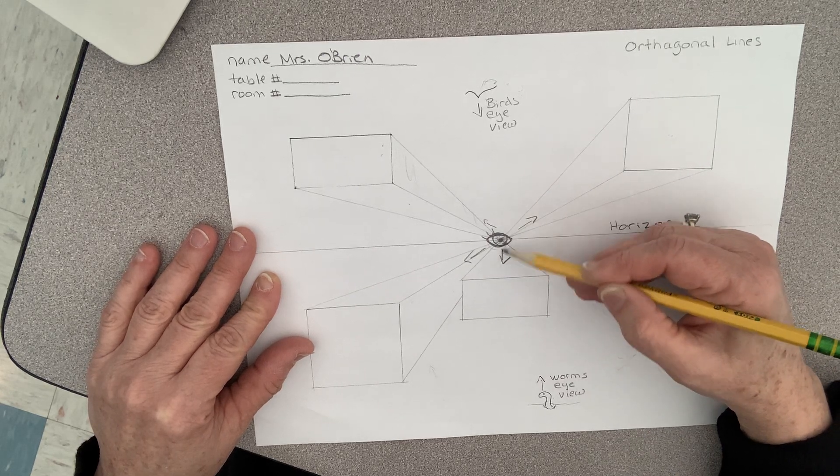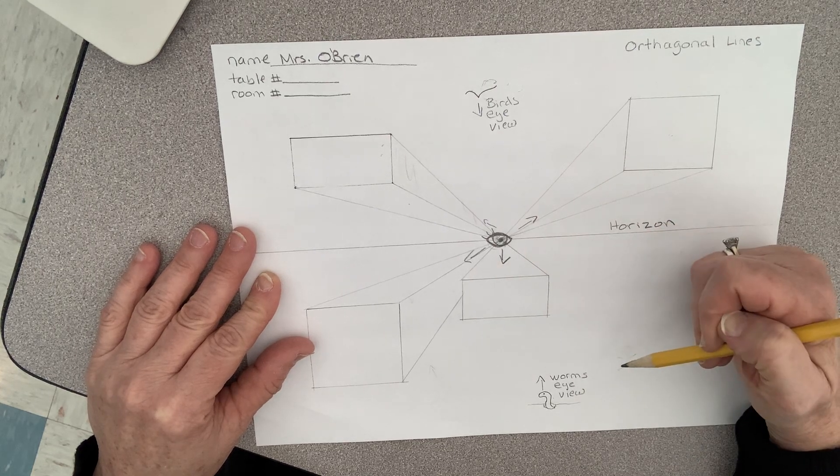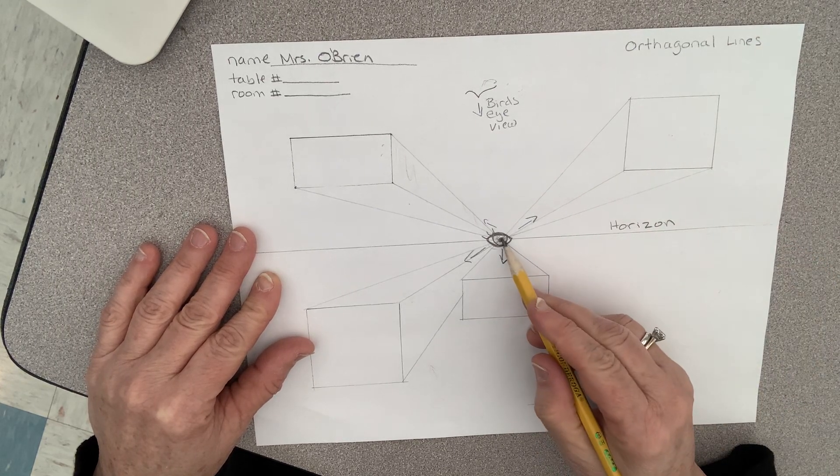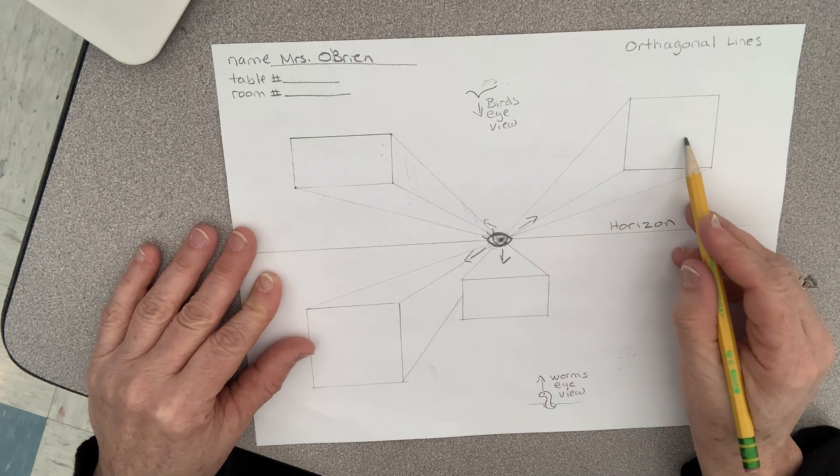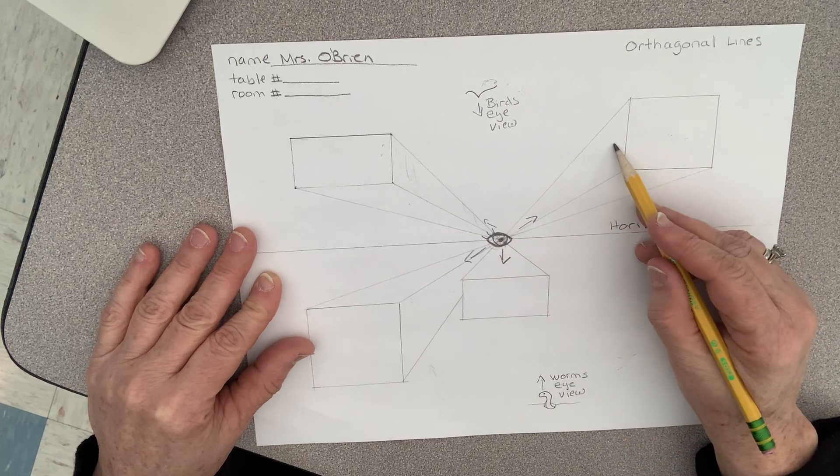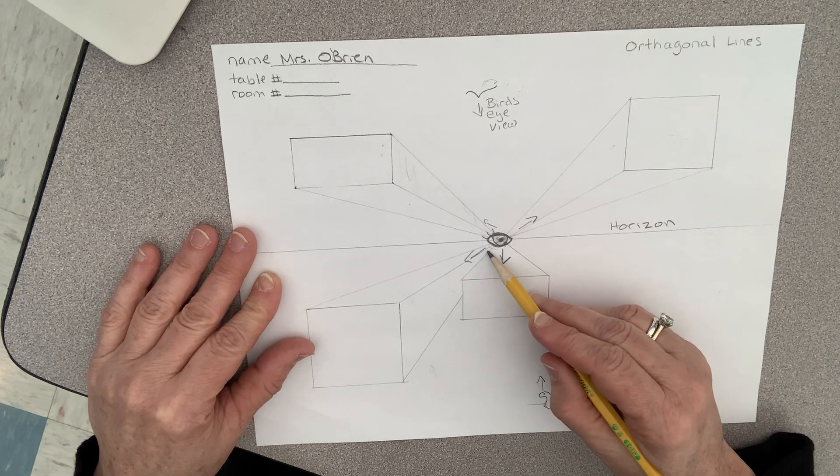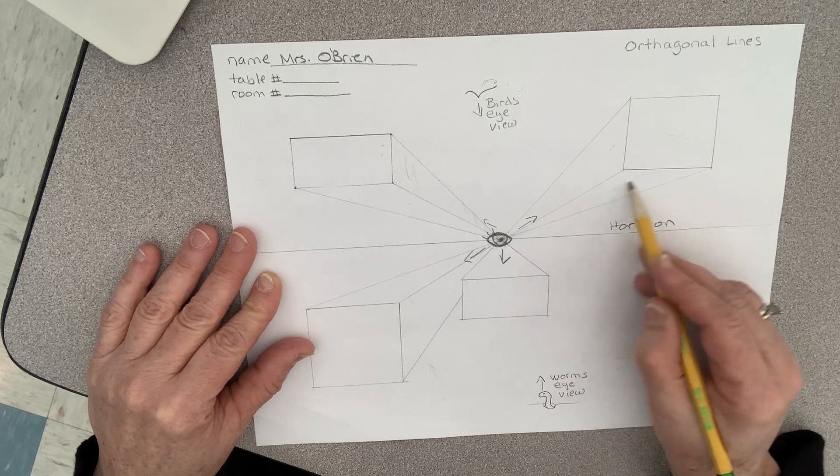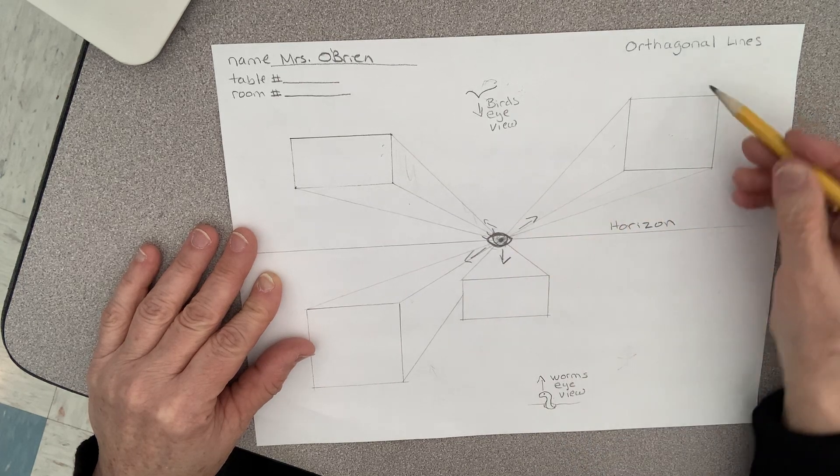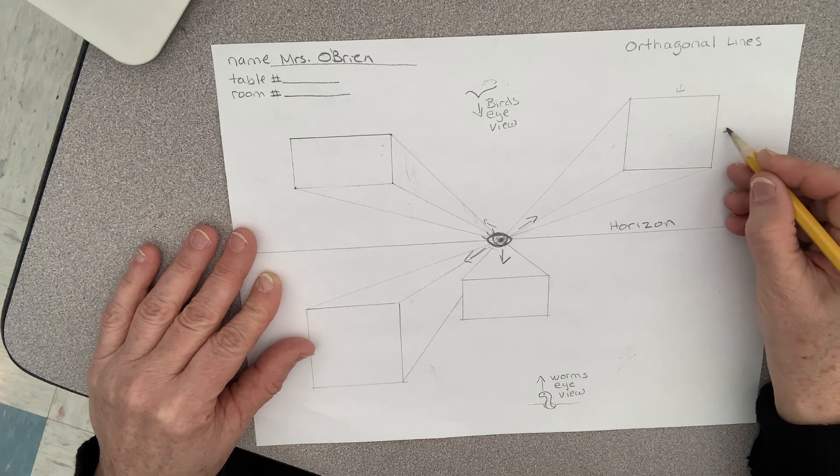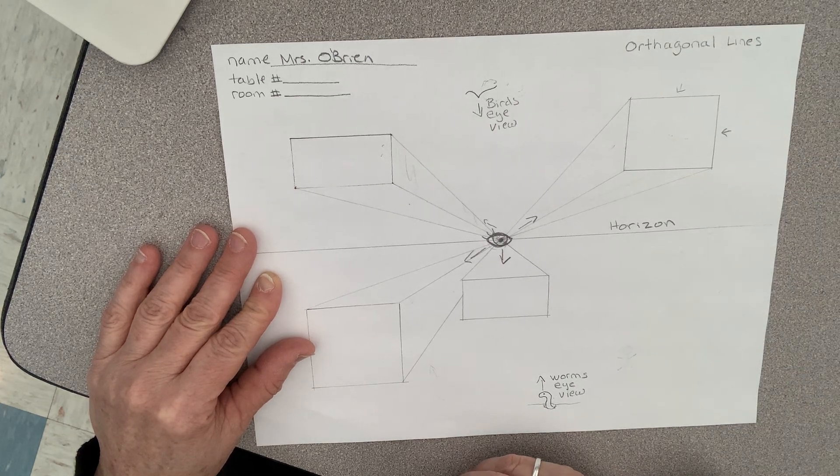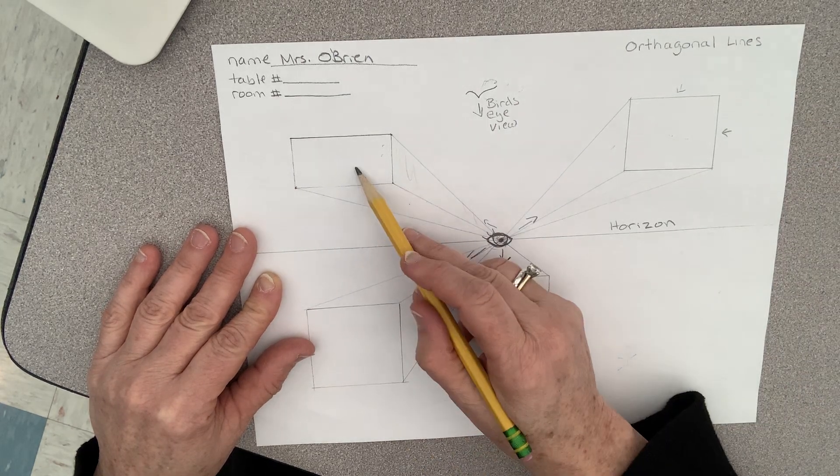If you're standing right here and you're looking at this box, you're gonna see the top but you're not gonna see the sides. If you're standing here and you're looking up at this box, you're gonna see this side of the box and you're gonna see the bottom of the box, but you're not gonna see this side of the box or this side of the box.